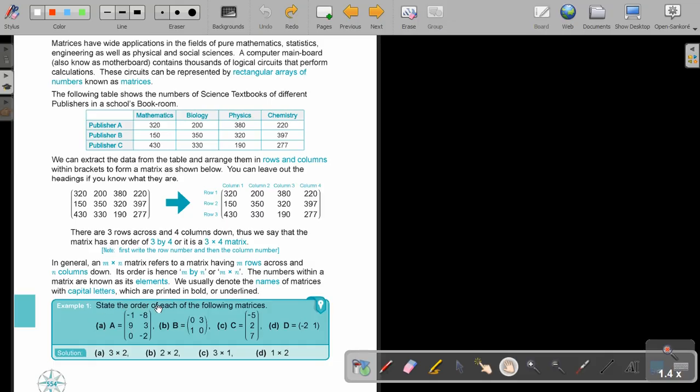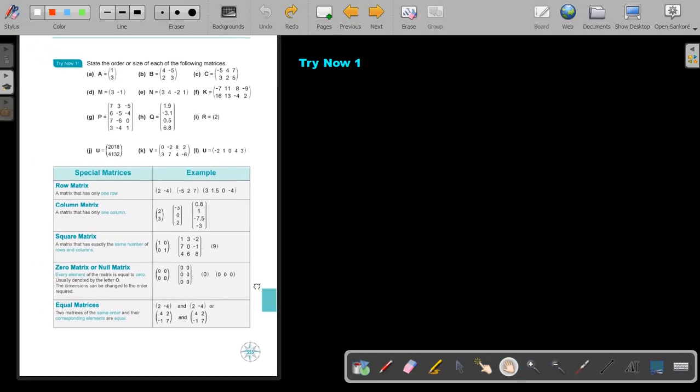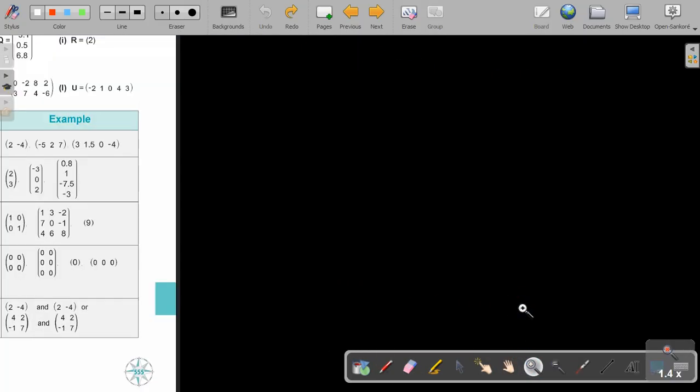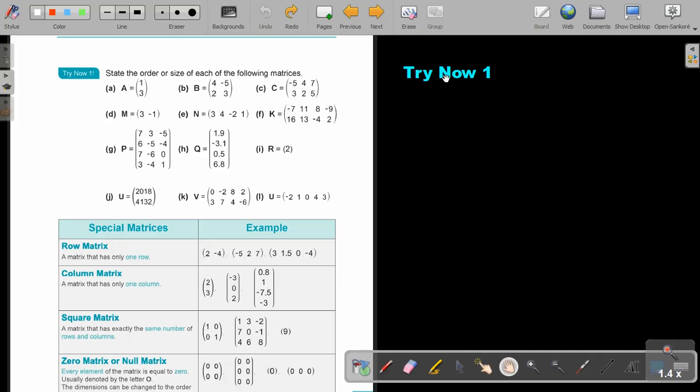Let's look at an example. State the order of each of the following matrices. Now, remember, first the rows. This is going to be one, two, three. There's the three. Multiply one, two, or by. It doesn't matter. This is two, multiply two. Remember the rows. One, two, three. And the columns, one. And then this one. The row, just one. But the columns, two. Stop the video and do try now one. You can continue the video as soon as you are finished.